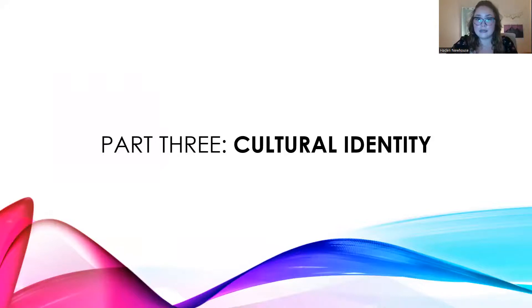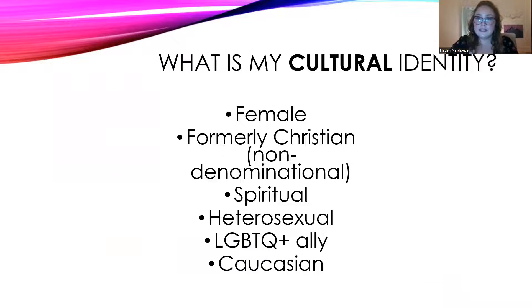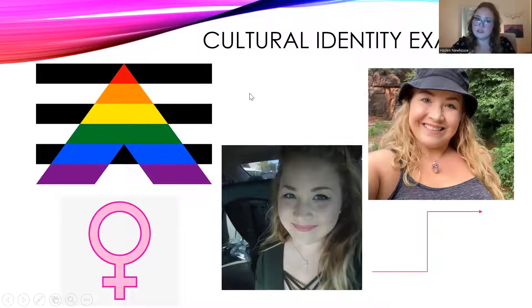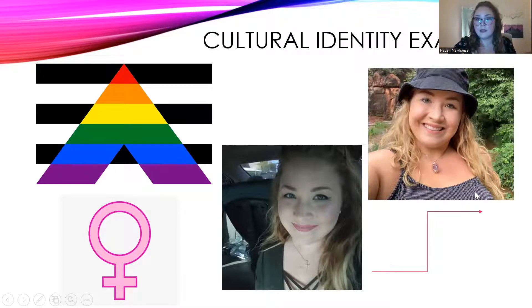So the next part is my cultural identity. My cultural identity is pretty straightforward. I'm a female. I grew up being religious, more specifically a non-denominational Christian. Now I consider myself to be spiritual. I'm also heterosexual. I'm a straight ally, and I advocate for LGBTQ rights. As you can tell by my appearance, I'm Caucasian. Here are some examples of my cultural identity: the straight ally flag, the female symbol, a picture of me wearing a cross necklace, and a picture of me more recently wearing a cage with an amethyst stone. And here I want to show you a picture of me with my boyfriend that I had taken recently.